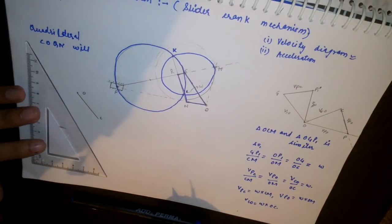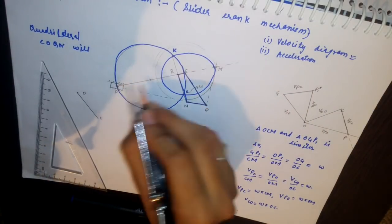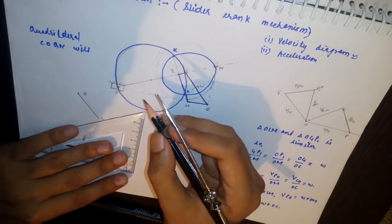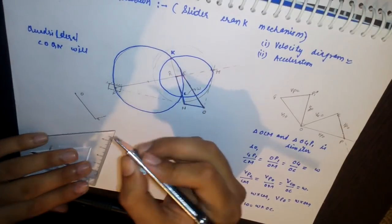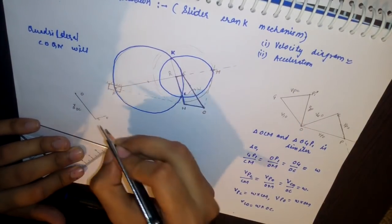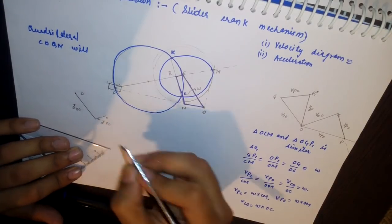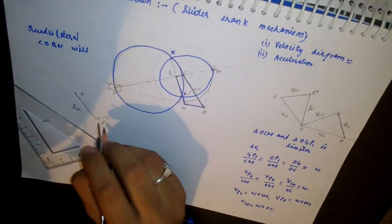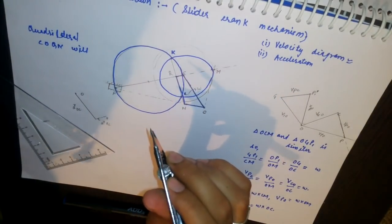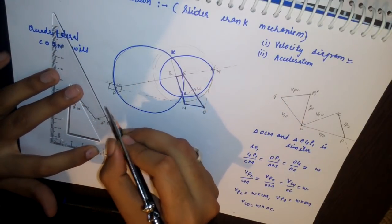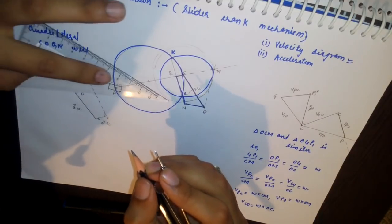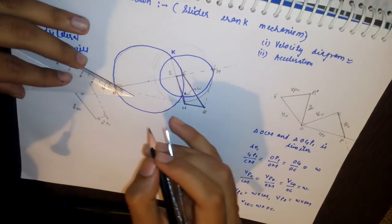The link PC has both tangential and radial acceleration. The radial acceleration will be along the line PC. The radial acceleration of OC and the radial acceleration of PC are identified. For the tangential acceleration of PC, we know the magnitude of the radial acceleration but not the tangential magnitude; however, we know the direction — it will be perpendicular to PC — so we draw a line with unknown magnitude perpendicular to PC.